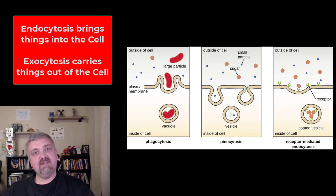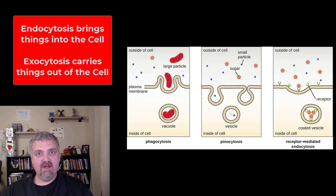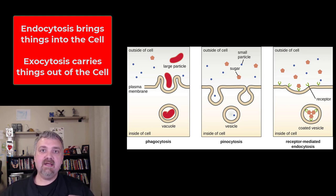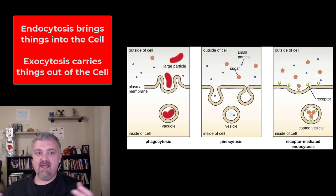The two main types of vesicular transport are going to be endocytosis, when you bring things into the cell, and exocytosis, when you bring things out of the cell. Exo — think exit.